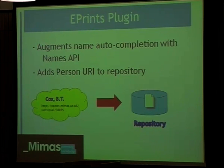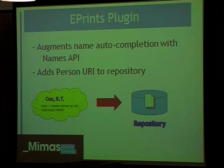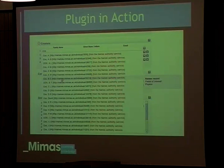The plugin is an augmentation of the existing name auto-completion which exists within ePrints, except it's not only searching the local database but it's also searching our API, and therefore we'll automatically add the NAMES URI for that person to the database. There's Brian again — this is a screenshot of typing Cox into the family name field and it's produced a dropdown where you can see Brian highlighted and his official NAMES URI highlighted there.